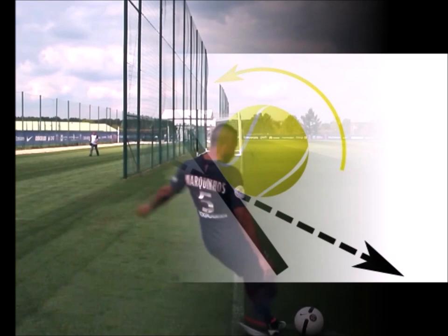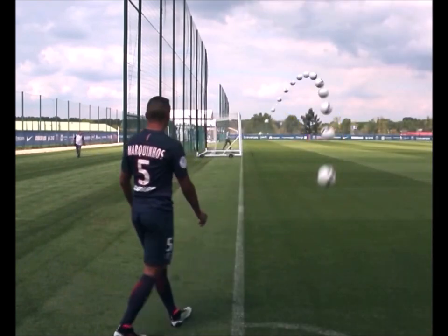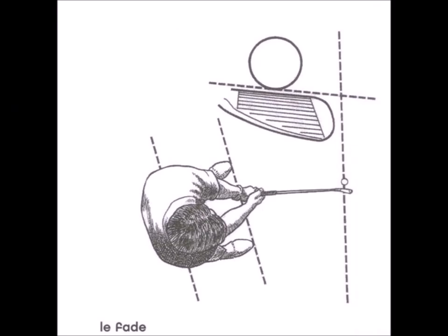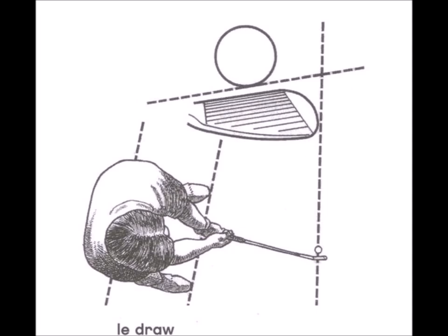When tennis, golf, or football balls are set rotating on themselves around a vertical axis when they are thrown, they are deflected to the left or to the right depending on their direction of rotation. This phenomenon only occurs in fluids and involves both translational speed and rotational speed.